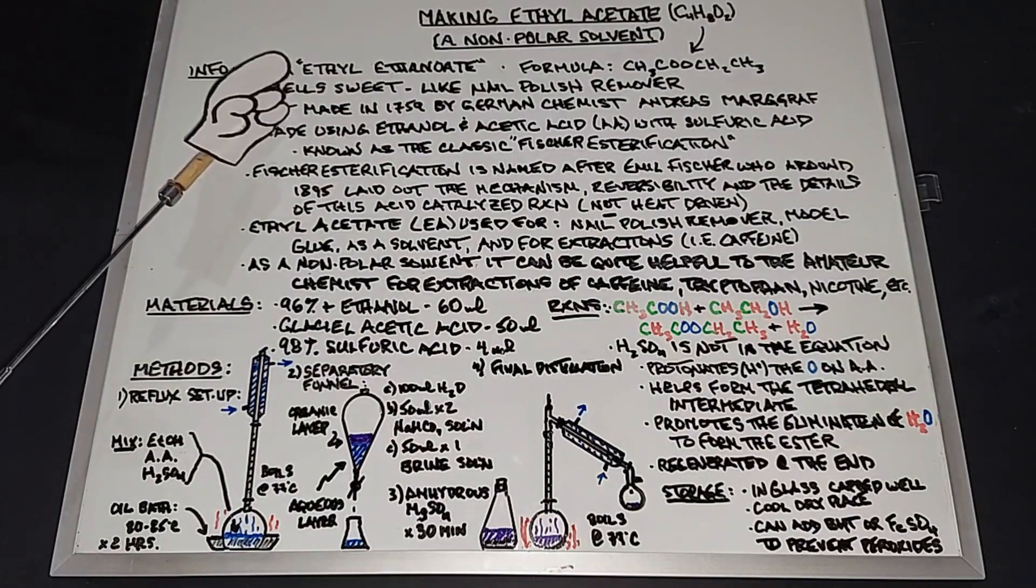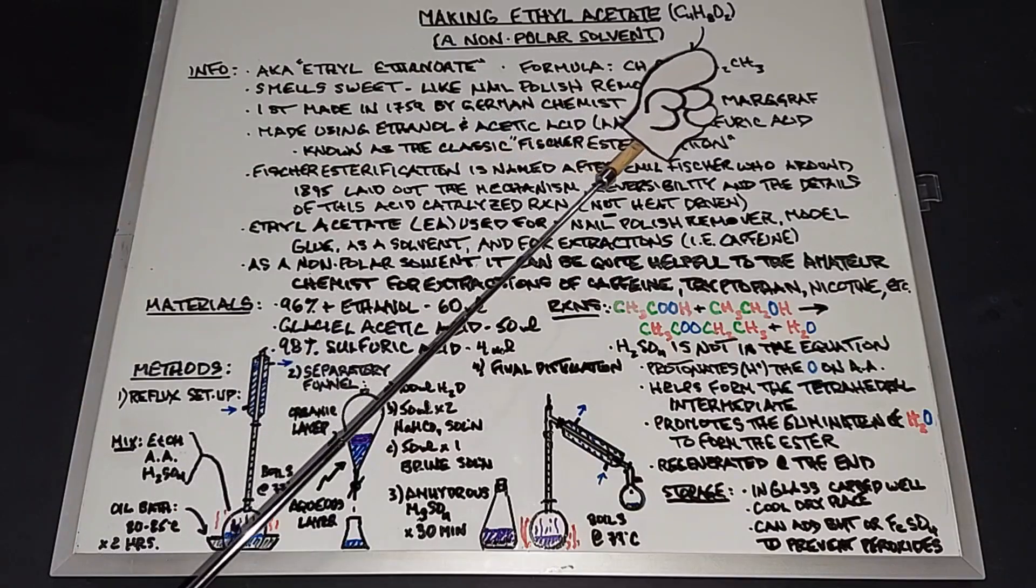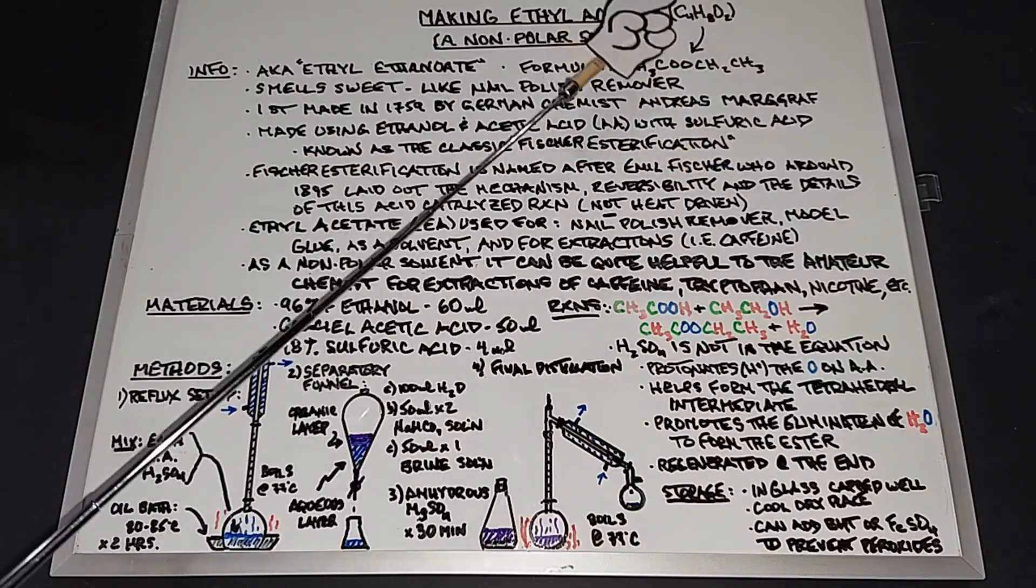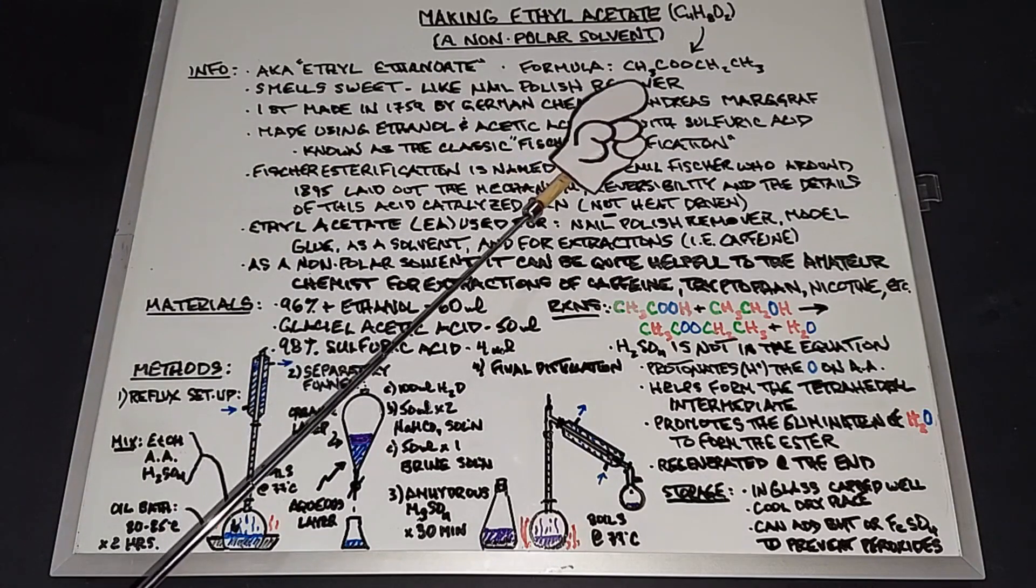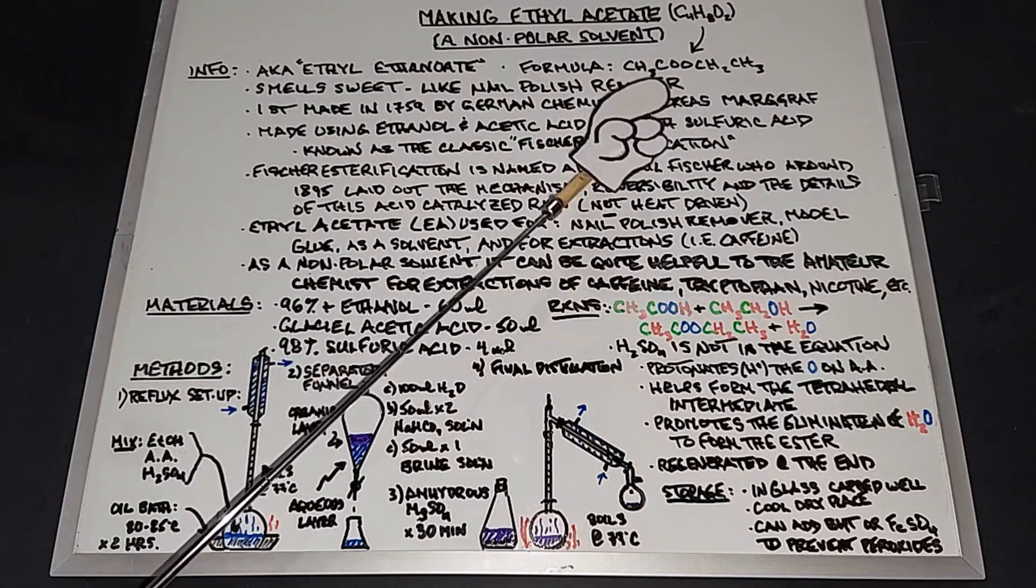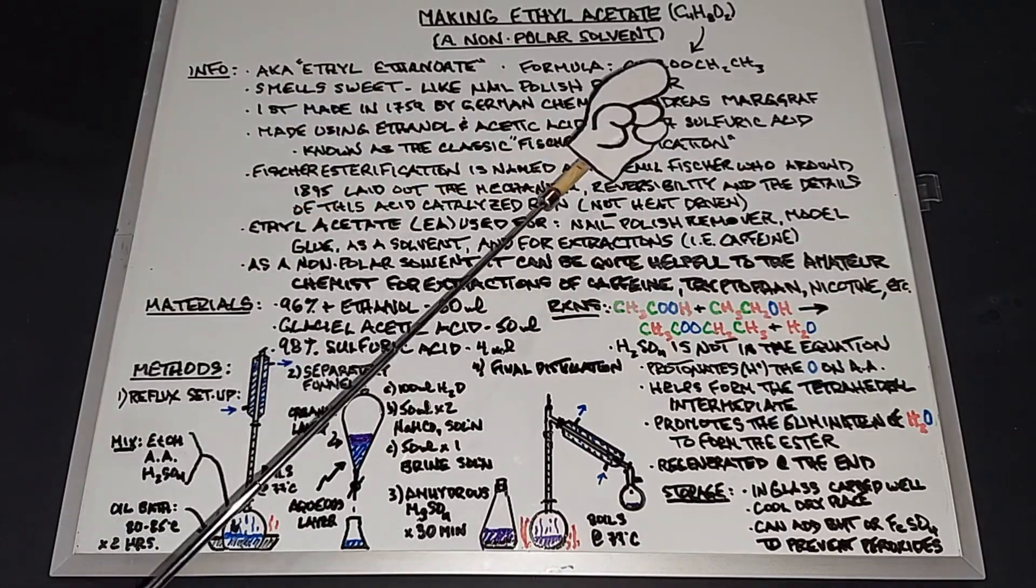Some information about this: it's also known as ethyl ethanoate. Its formula is CH3COOCH2CH3. It smells sweet like nail polish remover because nowadays most nail polish removers are made of ethyl acetate. It was first made in 1759 by German chemist Andreas Margroff.